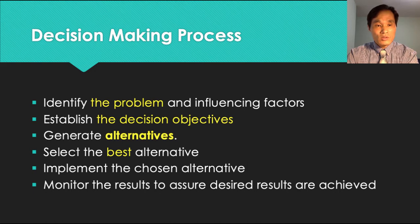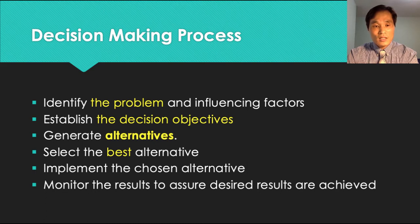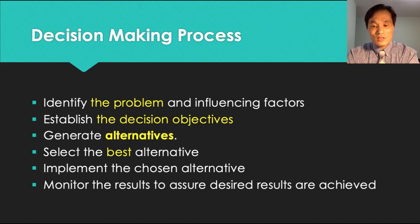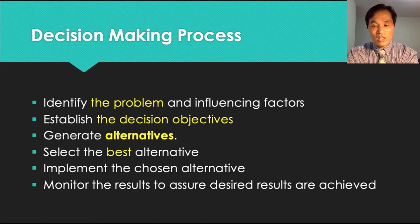There are six steps to follow in decision making. First, identify the problem and influencing factors, and relevant parameters. Second, establish the decision criteria such as goals and objectives. Third, generate alternatives by varying the values of the parameters. Fourth, select the best alternative. Fifth, implement the chosen alternative. And last, monitor the result to assure desired results, whether they are achieved or not.